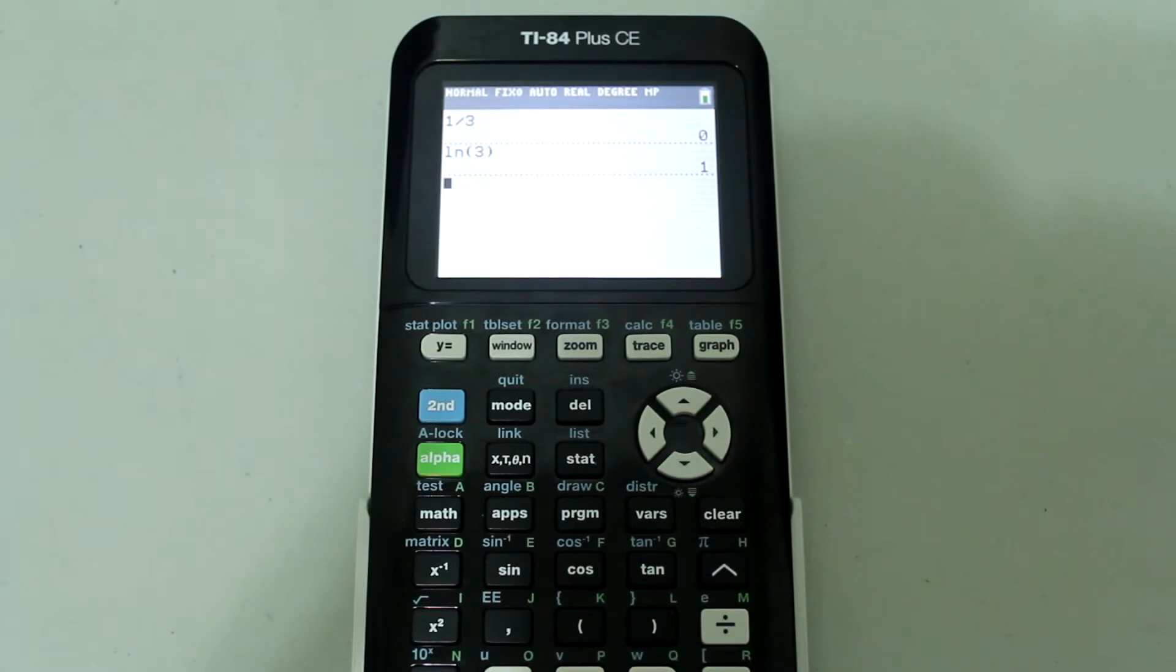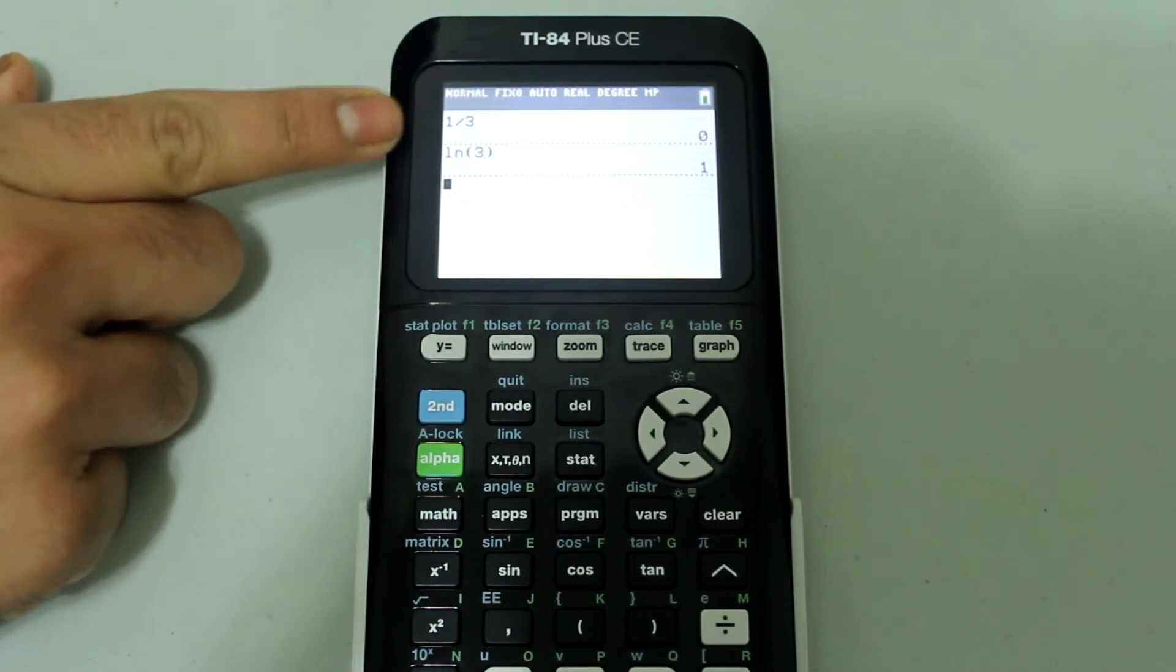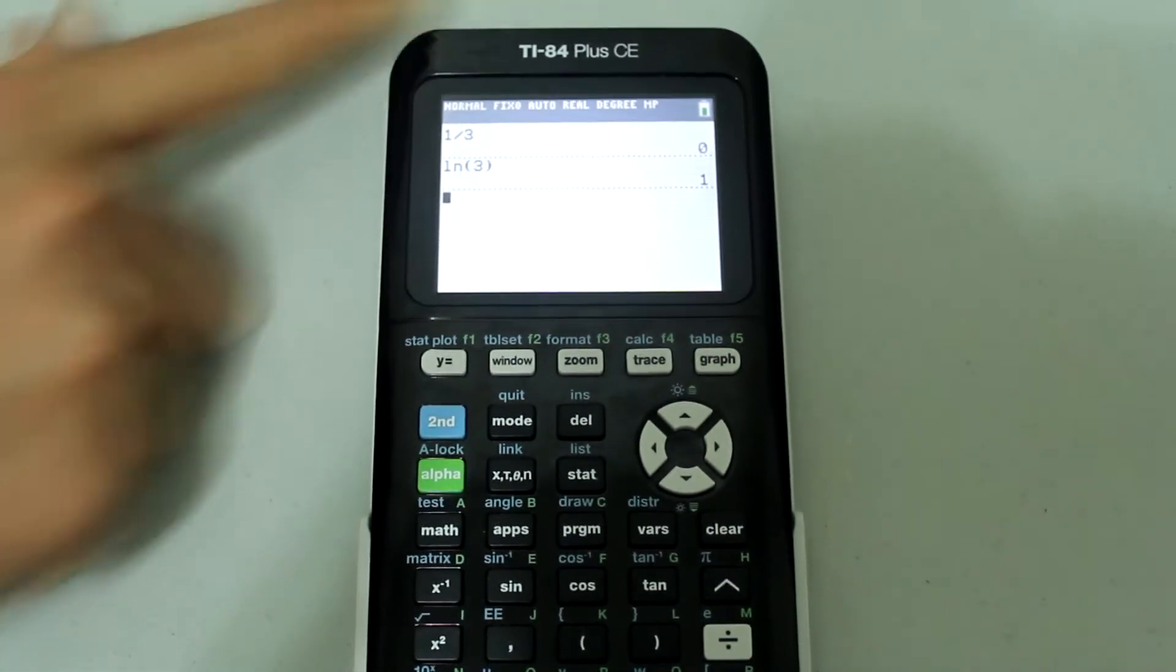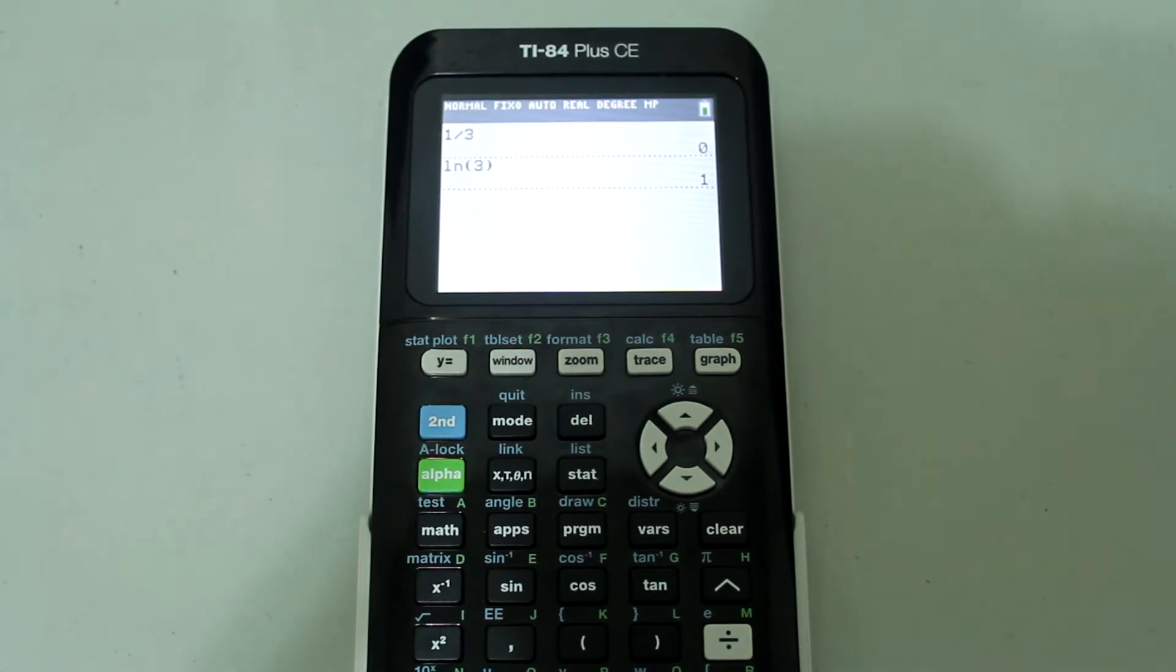And I know that 1 third doesn't give me 0 and natural log of 3 doesn't give me just 1. So what the calculator is doing is rounding to the nearest whole number.